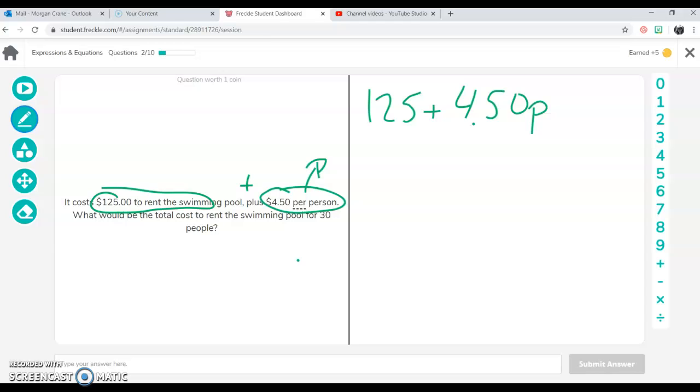So my expression is, hold on one second. I'm going to try to write it neatly. $125 plus $4.50 times P. The reason I have times P is because that's per person and we're making sure that we have everything together. So I'm going to read through it again. So it costs $125 flat to rent the swimming pool. So there's my 125 plus, there's my plus sign, $4.50 per person. So I have everything I need now.